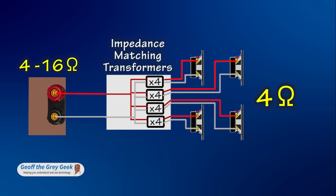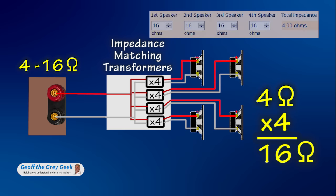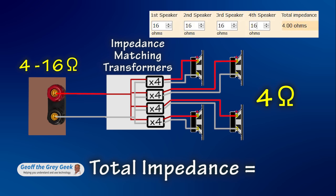However, if the multiplier is switched to times 4, then each speaker looks like 16 ohms. The calculator tells us 4 16 ohms in parallel give a total impedance of 4 ohms. This is fine for the amp.